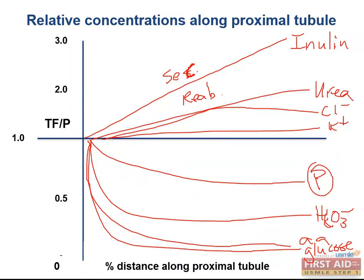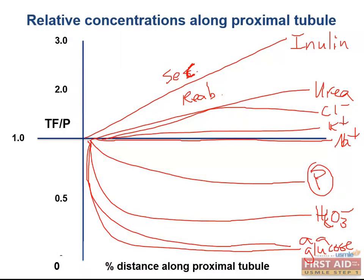On the other hand, chloride is reabsorbed slower than water in the proximal tubule, which makes sense since other anions such as phosphate and bicarbonate are being reabsorbed. One important note is sodium, which is reabsorbed at roughly the same rate as water, so the TF to P ratio remains at 1 because water is reabsorbed iso-osmotically. Remember: where sodium goes, water follows.